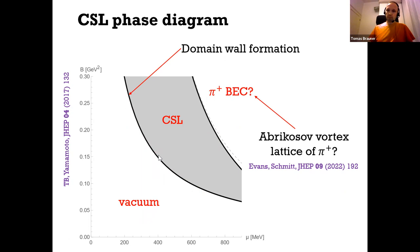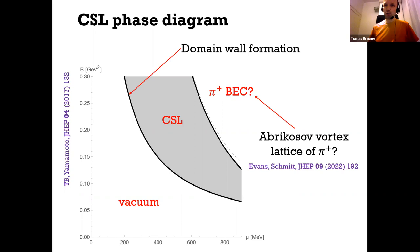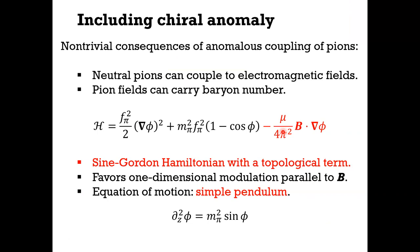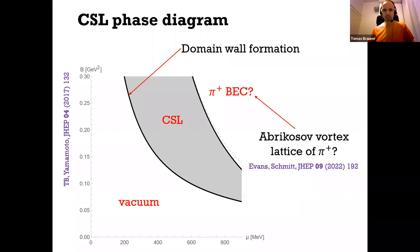Question from audience: is the one-dimensional modulation along B? Answer: Yes, absolutely. One can see why: you want the gradient of φ to be along B to really minimize the energy.